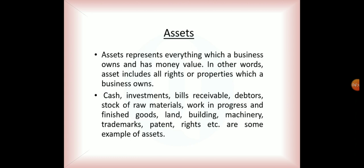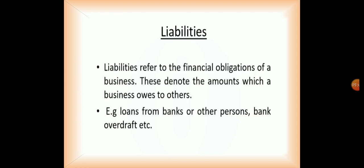Assets represent all those things which a business owns — everything a business firm possesses. This includes rights, properties, cash, investments, bills receivable, and debtors. Debtors are those people who are liable to pay to us — if we have given credit to someone, they are known as debtors, and debtors are also assets. Stock of raw materials, goodwill, patents, and copyrights are also considered assets.